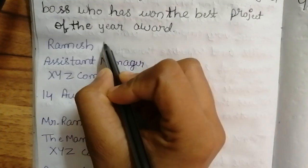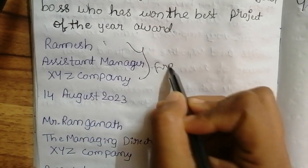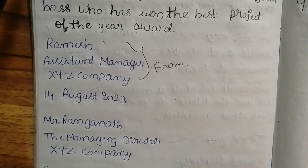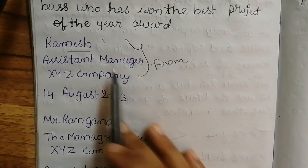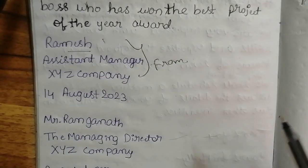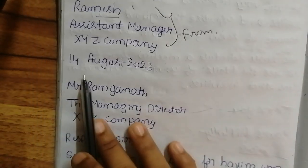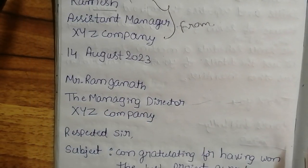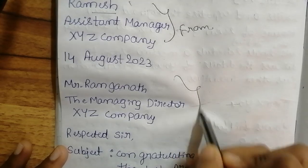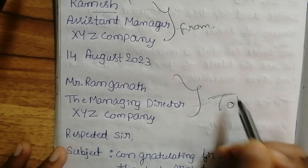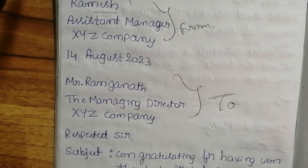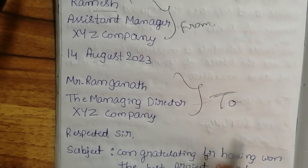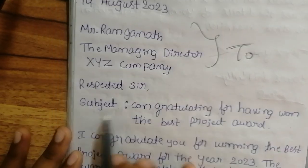Starting with the from address: Ramesh Shantabar, Assistant Manager, XYZ Company. The date is 14th August 2023. The letter is addressed to Mr. Rangnath, the Managing Director, XYZ Company.